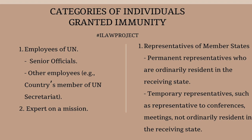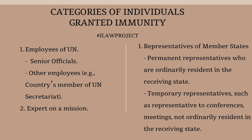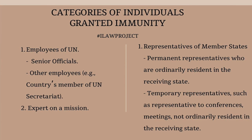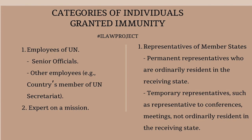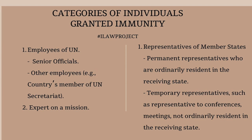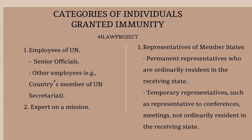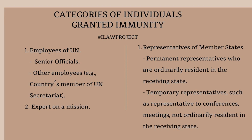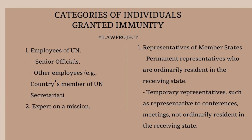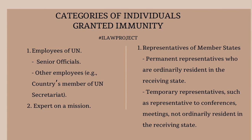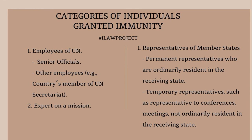Next, we will be addressing categories of individuals who enjoy immunity. It is important to note that immunity applies differently among various categories of people. For one category, you have employees of the United Nations — and this excludes locally recruited workers. Under this category, you have senior officials and other employees such as country members of the United Nations Secretariat. The degree of immunity that senior officials enjoy is somewhat different from the degree of immunity that other employees of the United Nations enjoy.